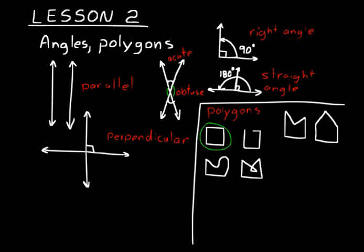It's important to know the difference between concave and convex polygons. For a concave polygon, you can draw a line segment that goes outside the polygon at some point. The one on the right is convex — we can't draw a line segment with its endpoints inside the polygon that goes outside at any point. So the one on the left is concave, the one on the right is convex.